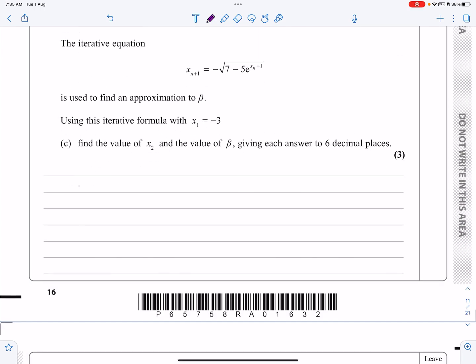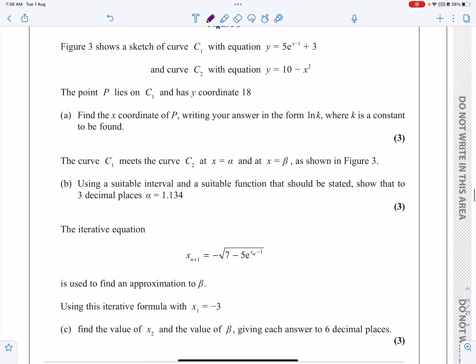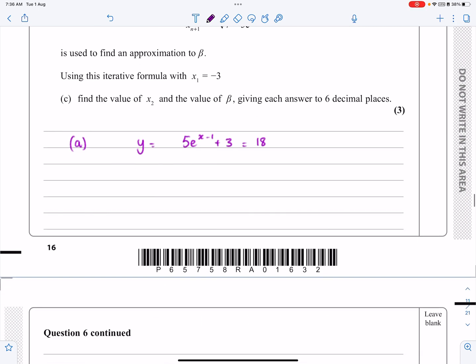So let's make a start. For part A, y is equal to 5e^(x-1) + 3, and that's going to be equal to 18. Just being careful, they want it in this format here, so I'll come back to that at the end. But let's solve this. Just rearranging, take 3 from both sides. We're going to get 5e^(x-1) equals 15. Divide both sides by 5. We're going to get e^(x-1) is equal to 3.